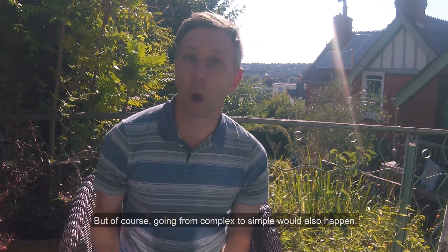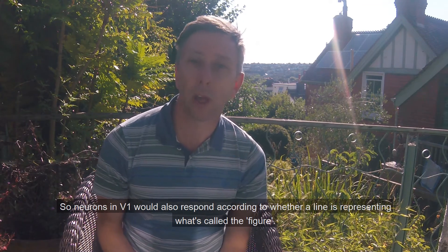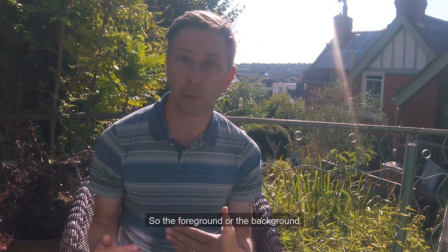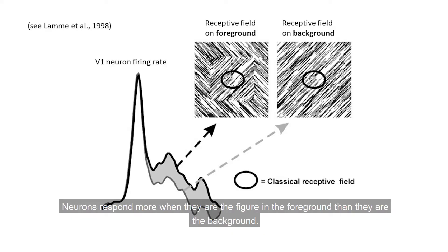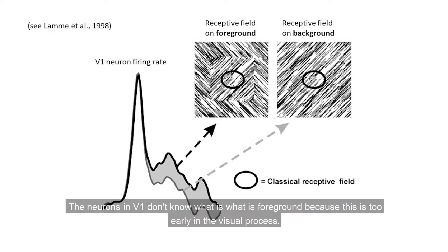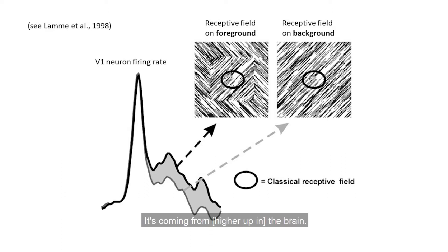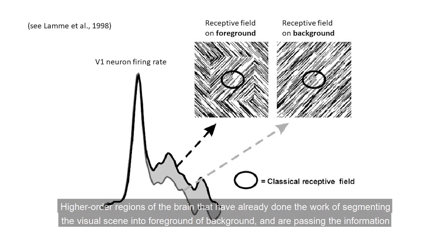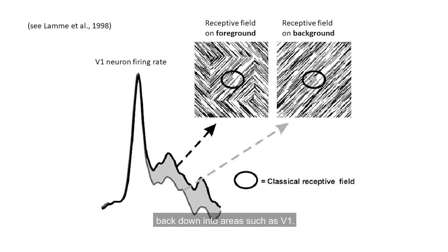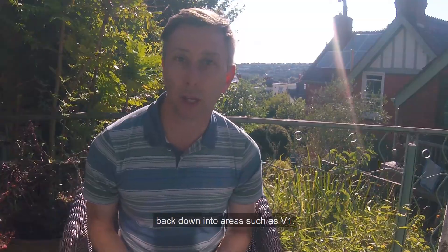Going from complex to simple also happens. Neurons in V1 respond according to whether a line represents the figure — the foreground — or the background, firing more when they are part of the foreground. But neurons in V1 don't know what is figure and what is background, as this is too early in the visual process. This information must come from higher order regions of the brain that have already segmented the visual scene into foreground and background, passing that information back down into areas such as V1.